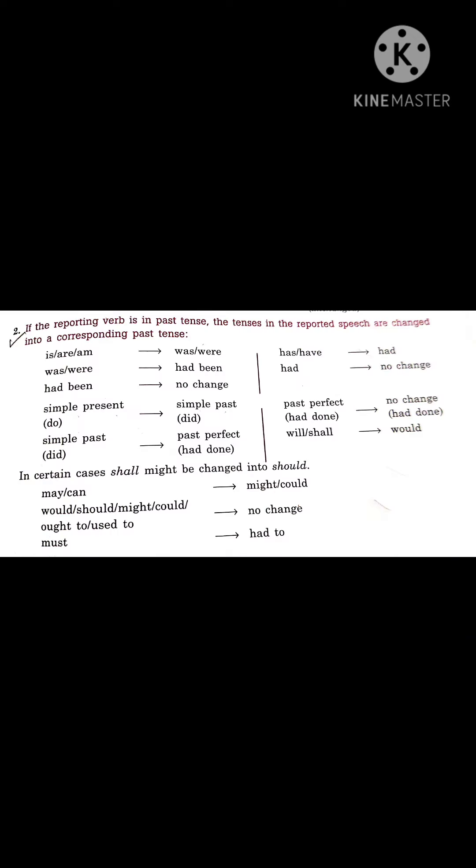If the reporting verb is in past tense, the tenses in reported speech are changed into corresponding past tense. 'Am/is' changes to 'was'; 'was' changes to 'had been'; 'had been' stays as 'had been'. Simple present changes to simple past — first form changes to second form. Second form changes to 'had done'. 'Has/have/had' all change to 'had'.